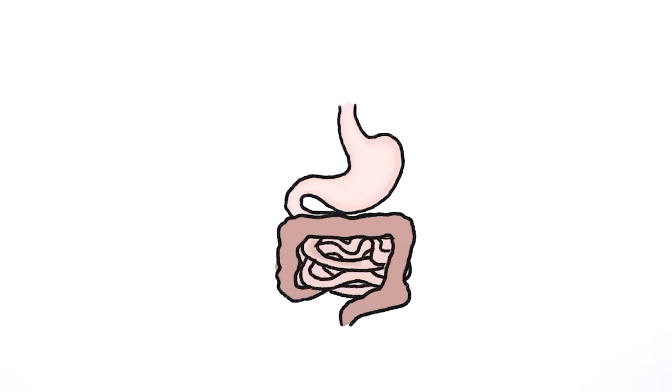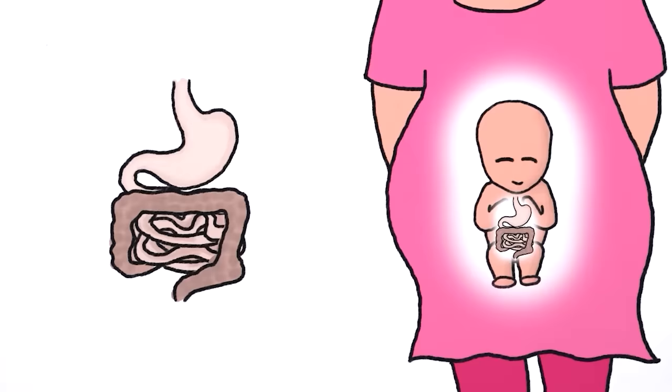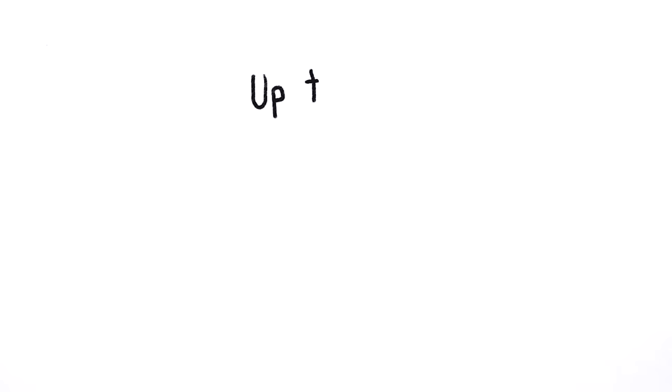The fetus's digestive system isn't totally empty, though. Some waste does go there and get broken down by acidic bile in the small intestines, producing a slimy, sticky, greenish mass called meconium. But unlike the large intestine of everyone outside a womb, a fetus's large intestine is mostly sterile, and devoid of the billions of bacteria that break down our waste and make up as much as 50% of the brown pulp known as feces.